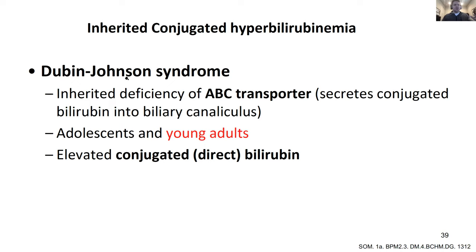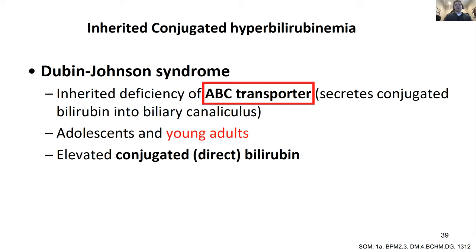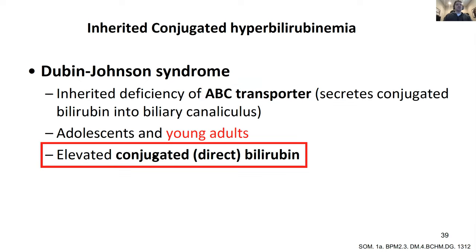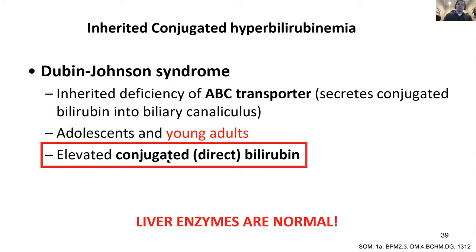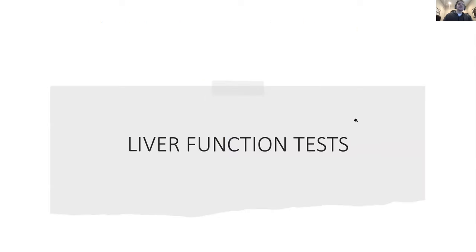Dubin-Johnson syndrome - sometimes called black liver or dark liver syndrome. This has increased conjugated or direct bilirubin. The bilirubin can get into the liver and gets conjugated, but because of a defective ABC transporter, there's a problem excreting conjugated bilirubin. Liver enzymes are normal here too, which is a good clue for all these inherited syndromes.